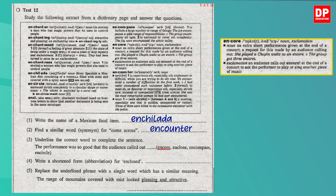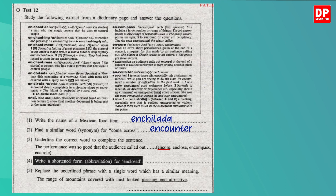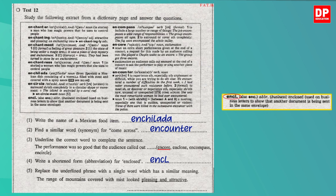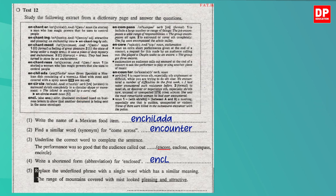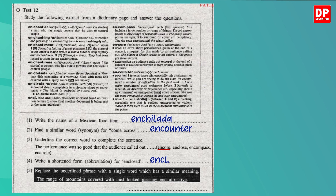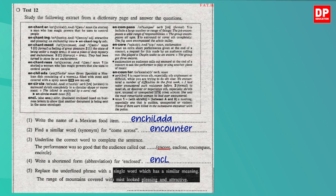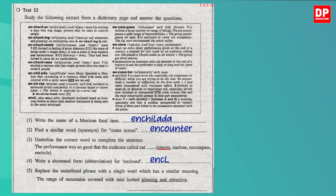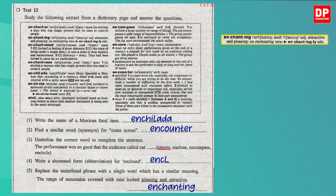What about the fourth? Write a shortened form — in other words, an abbreviation for 'enclosed.' Look at the dictionary entries now: 'Encl.' — Encl. is an abbreviation for enclosed. Now the fifth one: replace the underlined phrase with a single word which has a similar meaning. 'The range of mountains covered with mist looked pleasing and attractive.' What is the single word for 'pleasing and attractive'? It is the second entry — enchanting. Hope you could find answers to all the questions correctly.